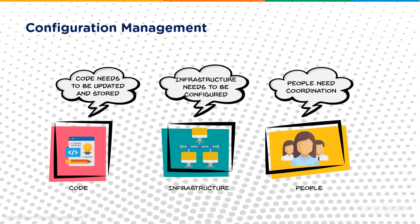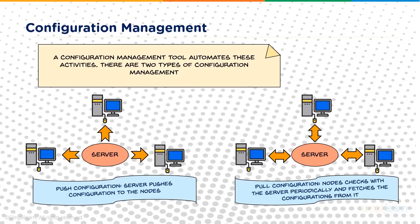Code needs to be updated whenever infrastructure requires a new configuration or OS/software version update. As company requirements change, infrastructure configuration must change. People need coordination too — if person A makes a change, persons B, C, D need to know why, what, and where the change was made. There are two types: push configuration, where the server pushes files to nodes, and pull configuration, where nodes pull from the server. Chef follows pull configuration.